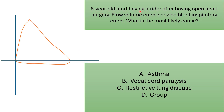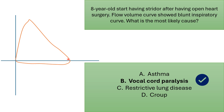This is an eight-year-old who started having stridor after open heart surgery. The flow-volume loop curve shows a blunt inspiratory curve. What is the most likely diagnosis? Asthma, vocal cord paralysis, restrictive lung disease, or croup? The correct answer is vocal cord paralysis. The inspiratory is affected by extra-thoracic obstruction when it looks blunt.